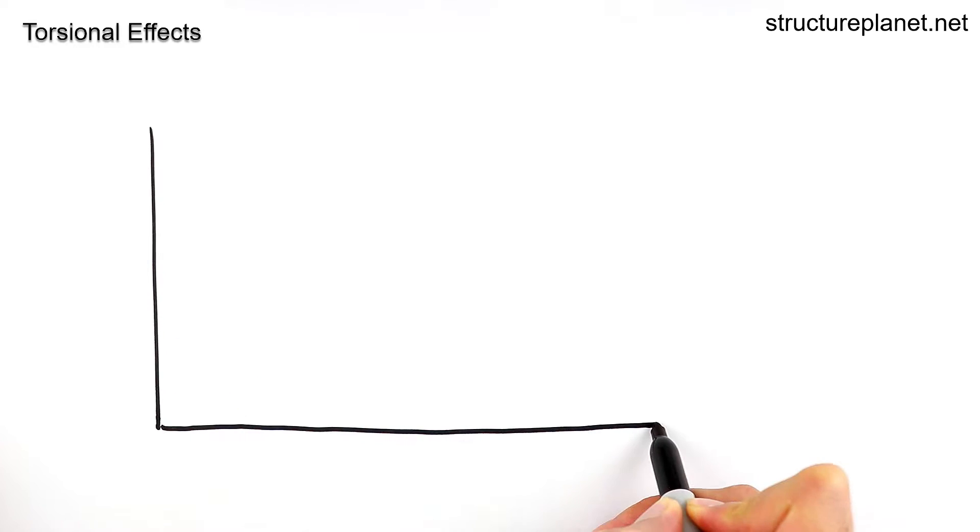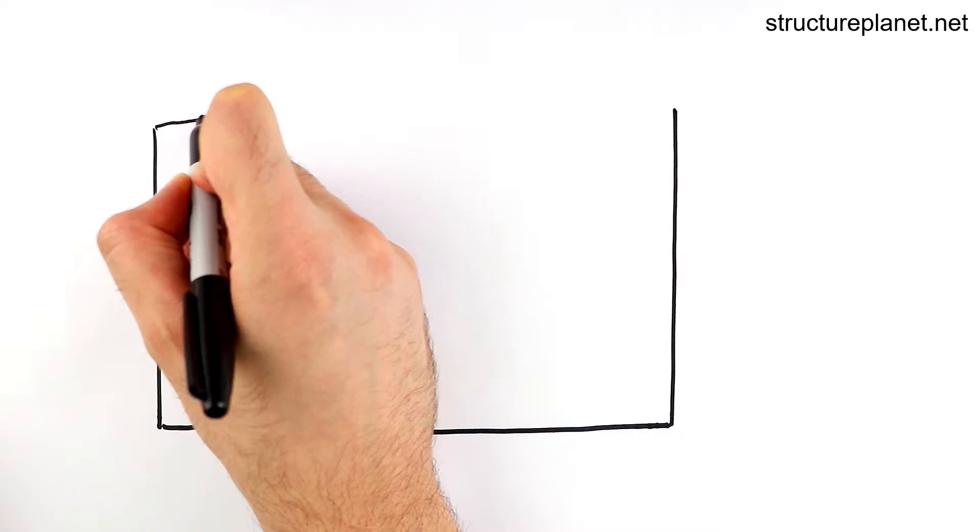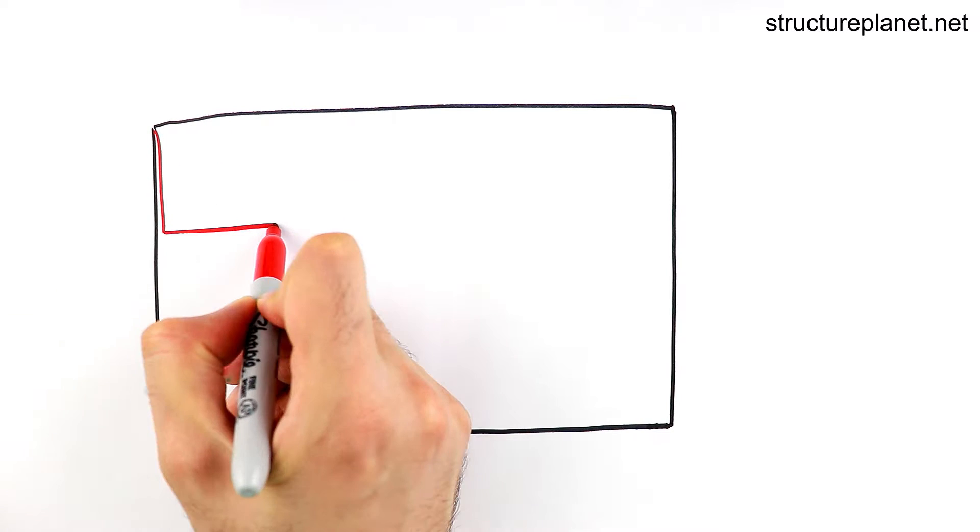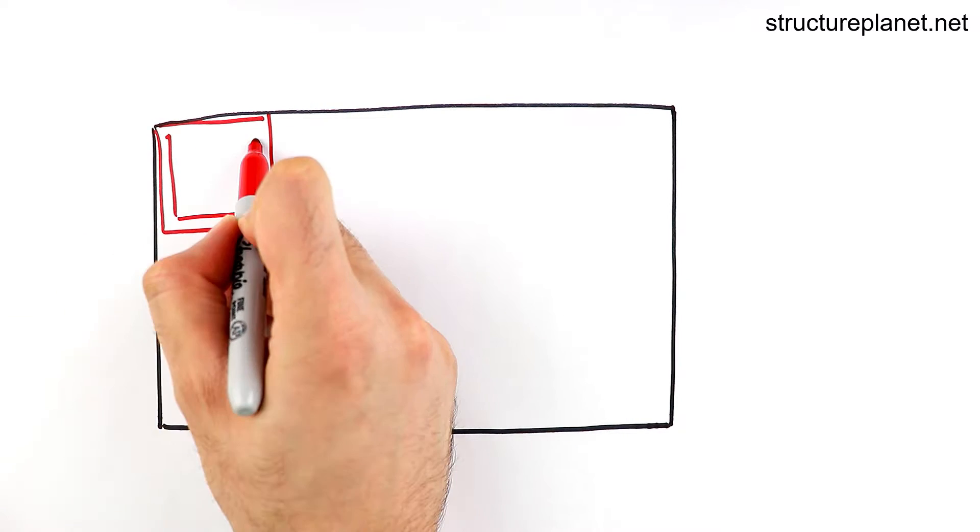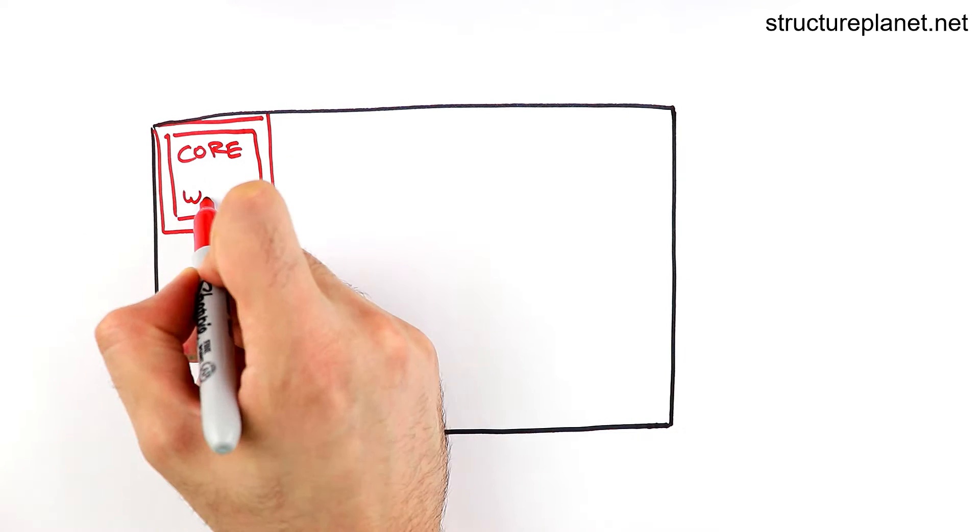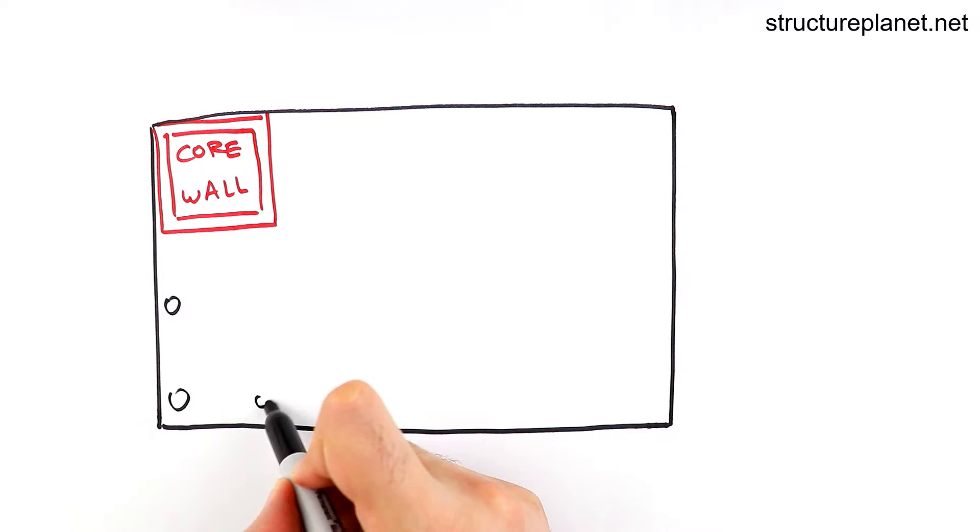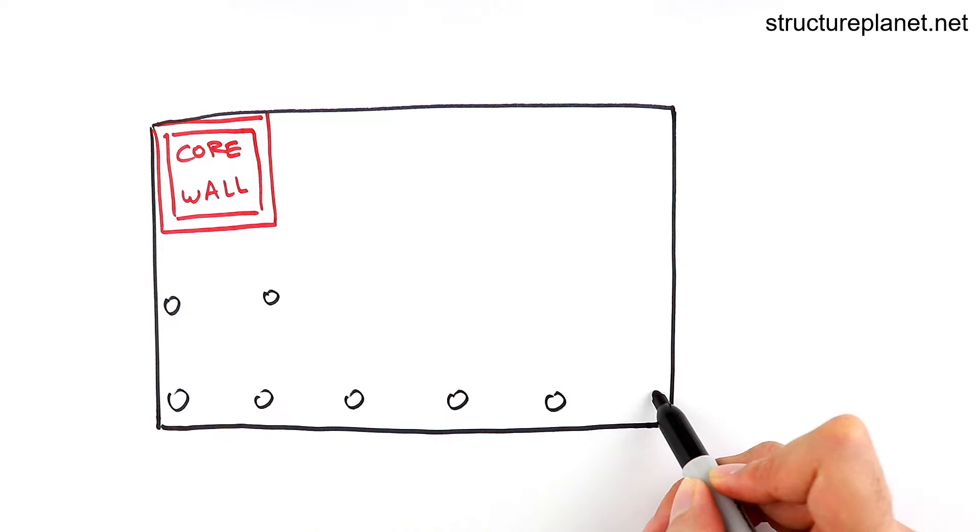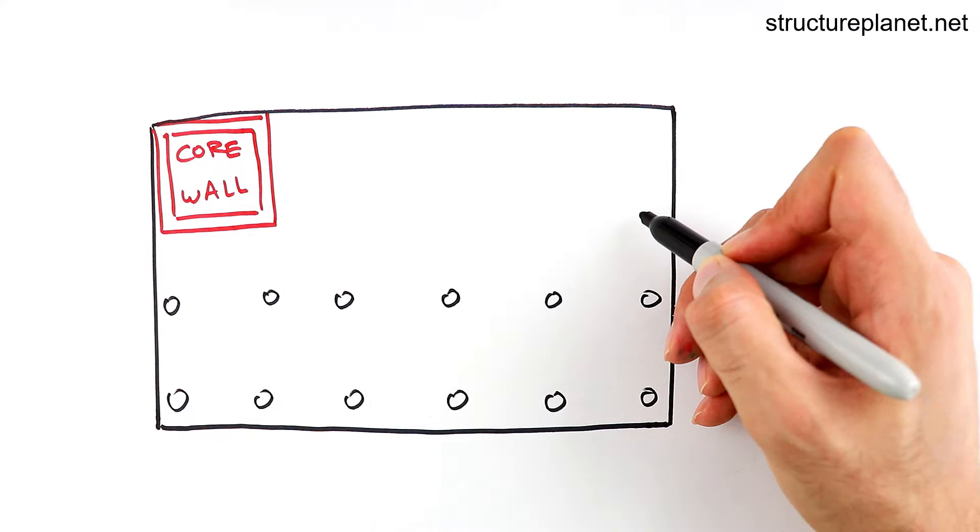The location of the lateral force resisting system is particularly important to avoid creating large torsions in the building. For example, if we have a core wall which is positioned at the corner of the floor plan and this building is subjected to lateral loads as shown,